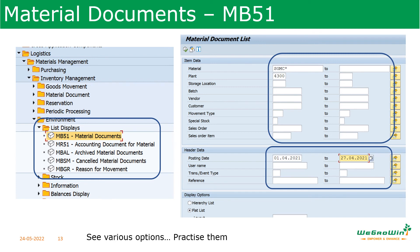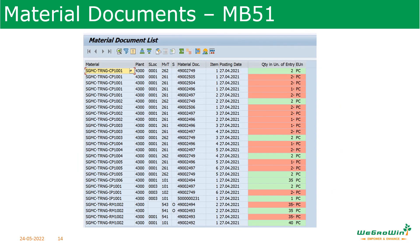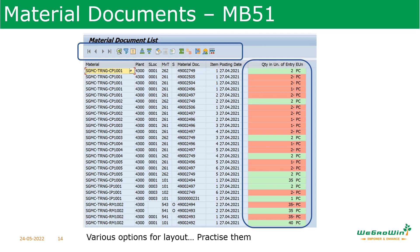After selecting the material, plant, and dates and executing the transaction, we can see the details. For each material, it shows the plant, storage location, posting date, and quantity. Green color indicates a receipt; red indicates a consumption or issue. Movement types like 261 and 101 are also shown. From the ribbon menu, you have multiple options: sort any column ascending or descending, summation, and export to Excel.